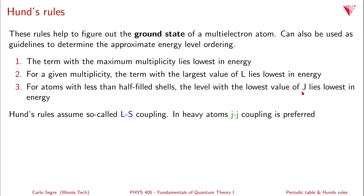The value of j is L plus S. The level with the lowest j would be |L minus S|, and the highest would be L plus S. Hund's rules assume LS coupling, meaning you calculate the total orbital angular momentum L and total spin angular momentum S separately, then couple them to get j. This works for most atoms, but in heavier atoms, so-called j-j coupling is preferred.